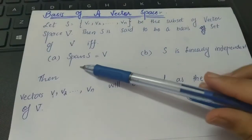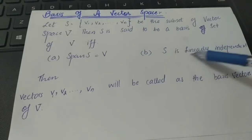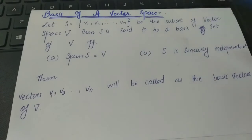The first condition is that span of S is equal to V. The second condition is that S is linearly independent, the whole set is linearly independent.